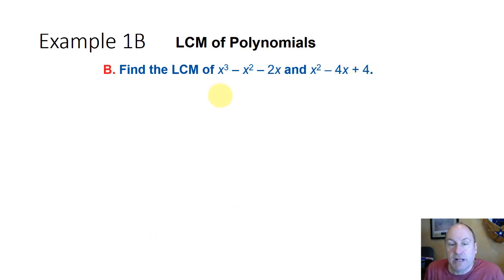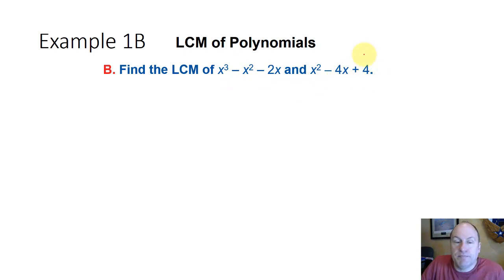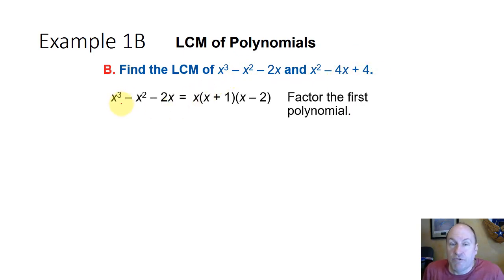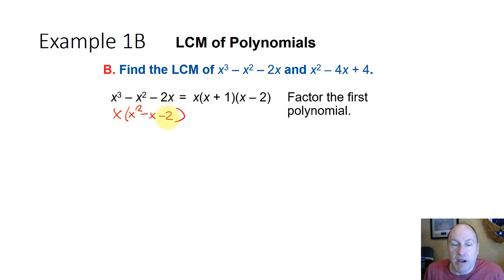When we're dealing with polynomials, we look at a similar type of process. The lowest common multiple of x to the third minus x squared minus 2x, and x squared minus 4x plus 4. First, we try to factor. So x to the third minus x squared minus 2x — we can factor an x out, leaving x squared minus x minus 2, which factors into x plus 1 times x minus 2.